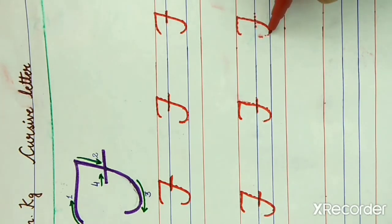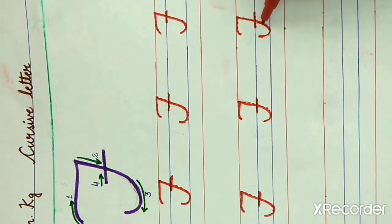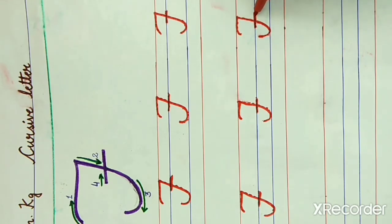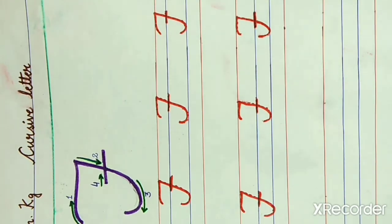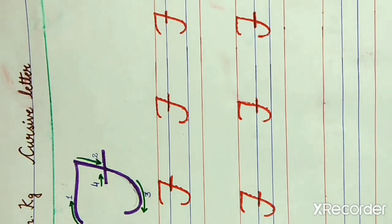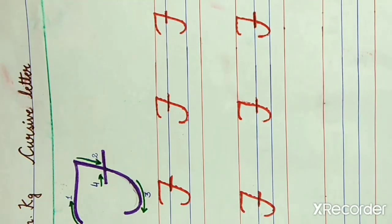What do you need to do? First: curve line. Second: slanting line. Third: small semicircle. And last, fourth line is small slipping line. What is this? This is letter F. F for fish. What is the spelling of fish? F-I-S-H.